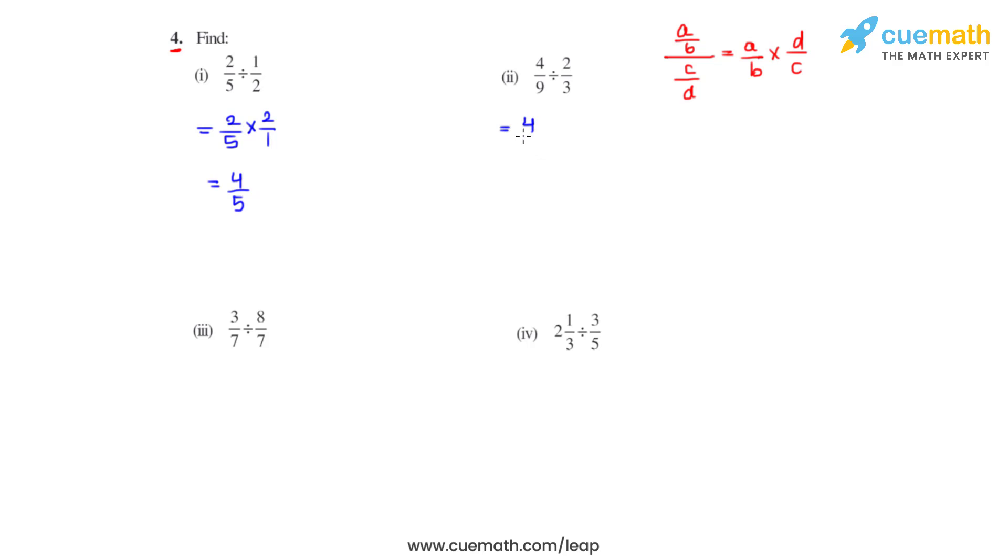Coming to the second bit, we have 4/9 divided by 2/3. So we put a multiplication sign and flip the second fraction, and that gives us 3/2. Now, 2×1 is 2, 2×2 is 4, 3×1 is 3, 3×3 is 9. That gives us the final answer as 2/3.